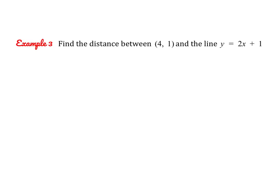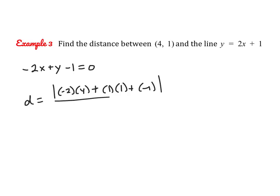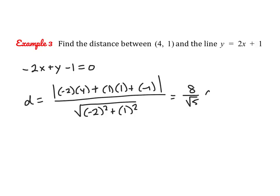Let's try this first example: the distance between the point (4, 1) and the line y equals 2x plus 1. First, put the linear equation into general form: negative 2x plus y minus 1 equals 0. Now use the formula: d equals the absolute value of negative 2 times 4, plus 1 times 1, plus negative 1, all over the square root of negative 2 squared plus 1 squared. Simplifying that, we get 8 over root 5, which is approximately 3.58 units.